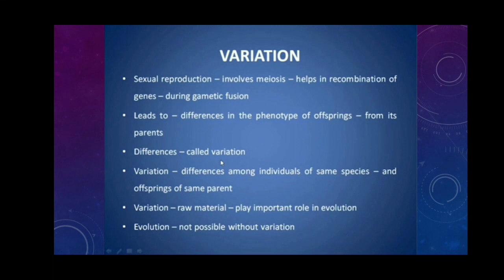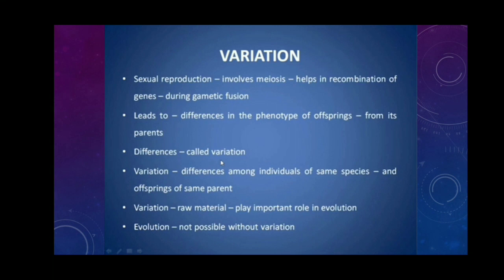How do these variations occur? Variation occurs only in sexual reproduction, not in asexual reproduction. In sexual reproduction, during the process of fertilization, the male gamete sperm fuses with the female gamete ova. As a result of fertilization, a zygote is formed. The zygote contains the genetic material of both parents — half from the father and the remaining half from the mother. This leads to differences in the phenotype of the offsprings from their parents. These differences are called variation.